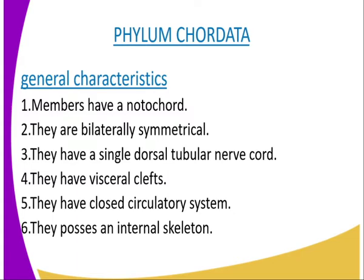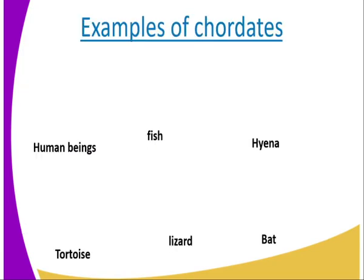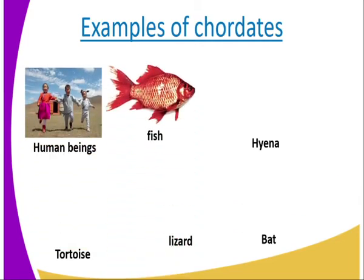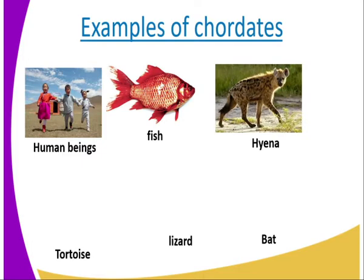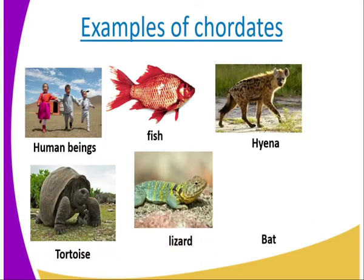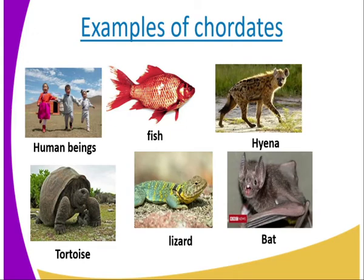We have the general characteristics of members of this class. As I highlight the general characteristics, you will be required to see whether you are able to identify these characteristics from our examples. Some of the examples: we have human beings, fish, hyena, tortoise, lizards, and bats. I am going to give the general characteristics of these chordates and you will be able to observe them in the diagrams on our screen. The first general characteristic is that members of this phylum have a notochord, at least at some stages of their development.